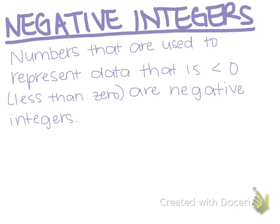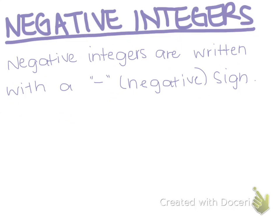Numbers that are used to represent data that is less than zero are negative integers. Negative integers are written with a negative sign in front of the number. For example, we would write negative two like this.